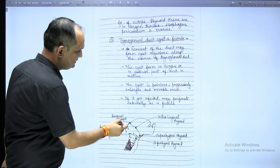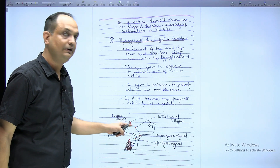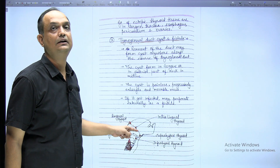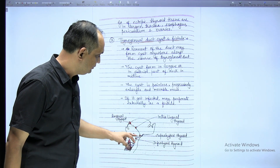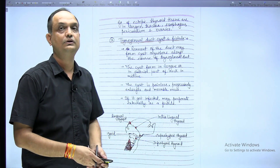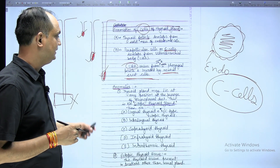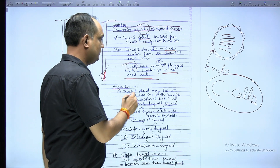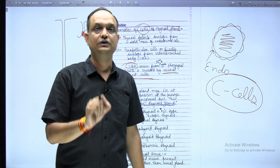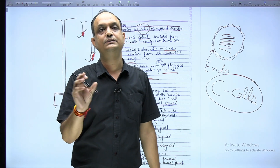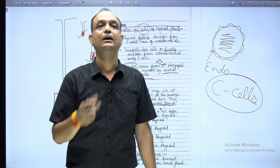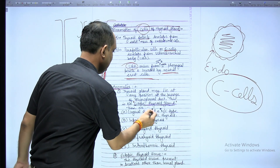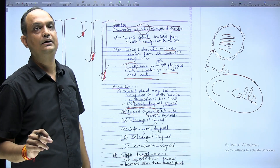Looking at the diagram, the point of the foramen cecum is shown. If the diverticulum develops there and the gland forms at the tongue base, it is known as lingual thyroid. If the duct passes through the substance of the tongue and develops there, it is intralingual. If it lies just above the hyoid bone, it is suprahyoid. If it goes below, it is infrahyoid. Sometimes the duct is so long it enters the anterior mediastinum — this is the intrathoracic thyroid gland. Ectopic thyroid gland means the gland develops in the normal pathway of the thyroglossal duct in the midline. Lingual thyroid is the most common variety of ectopic thyroid gland.